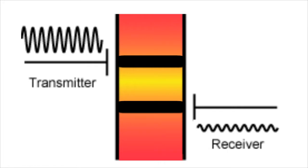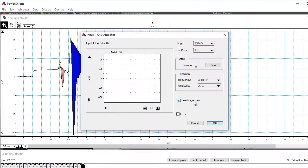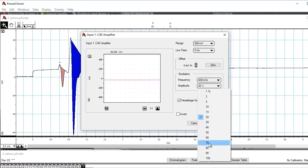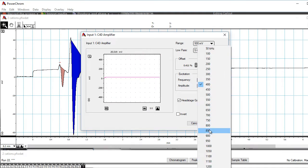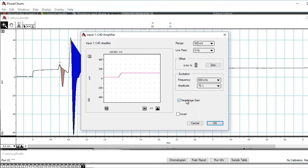The EDACC4D lets the user select the amplitude and the frequency of the sine wave. Using the optimum amplitude and frequency is important to get the best sensitivity from the C4D detector. In PowerChrome software, for example, the excitation amplitude can be selected here, the excitation frequency here, and the head stage gain just here.